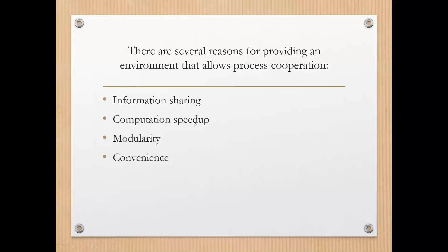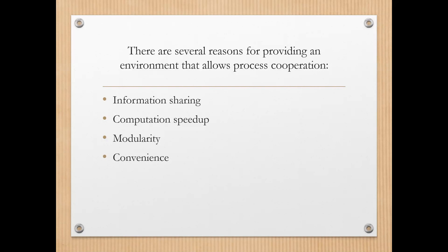The next reason is computational speedup. In order to achieve computational speedup, if we have a task, we divide it into several subtasks and make all the subtasks run concurrently. Instead of waiting for one task to complete from beginning to end, we break it down into subtasks that run at the same time, achieving more speed in our system.